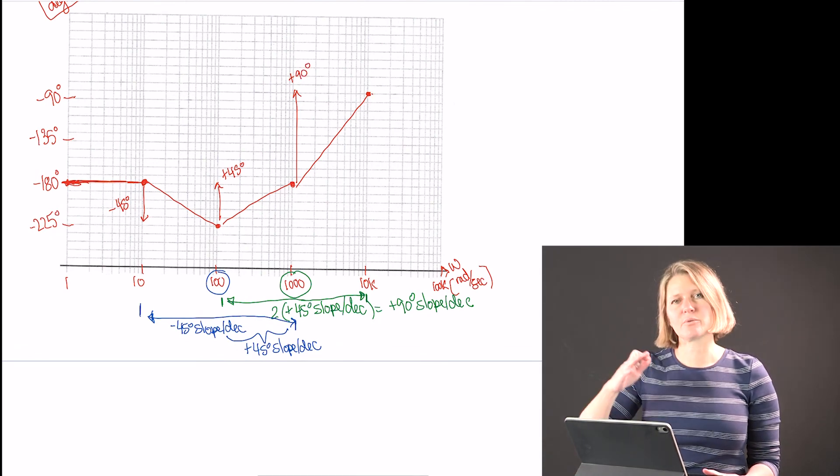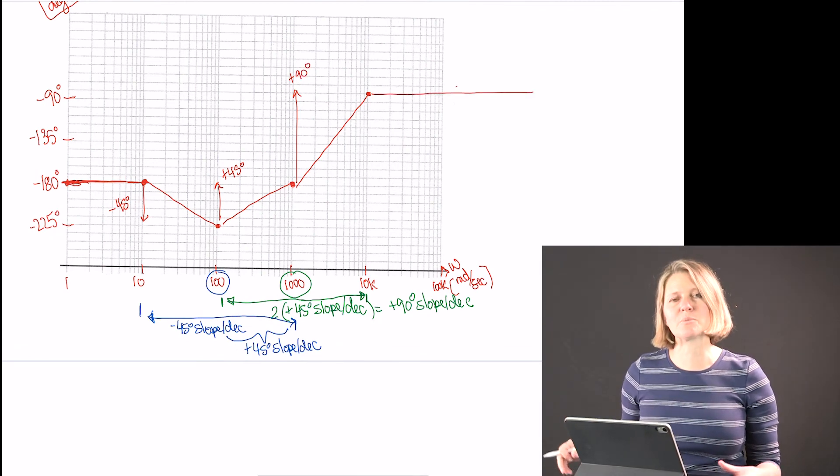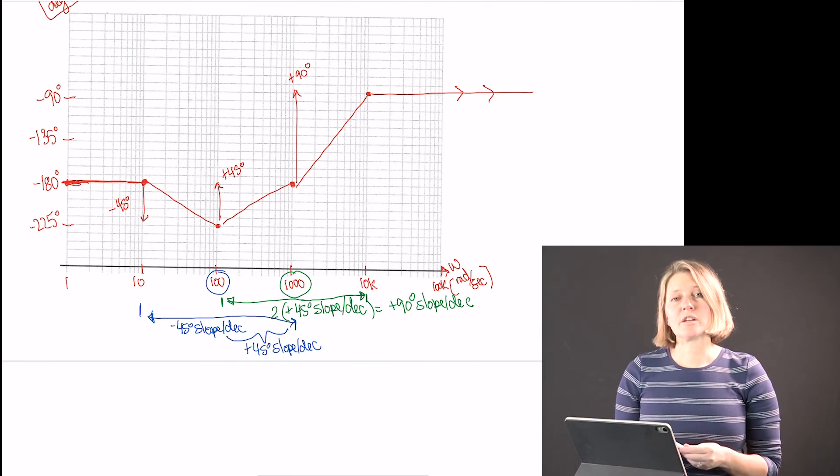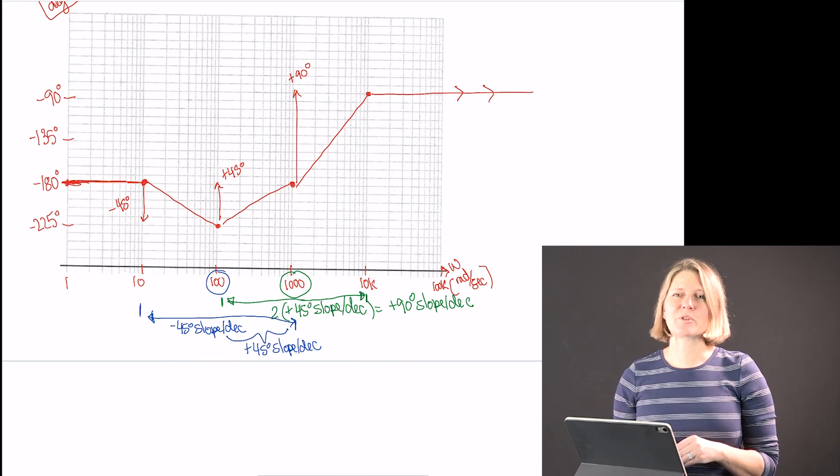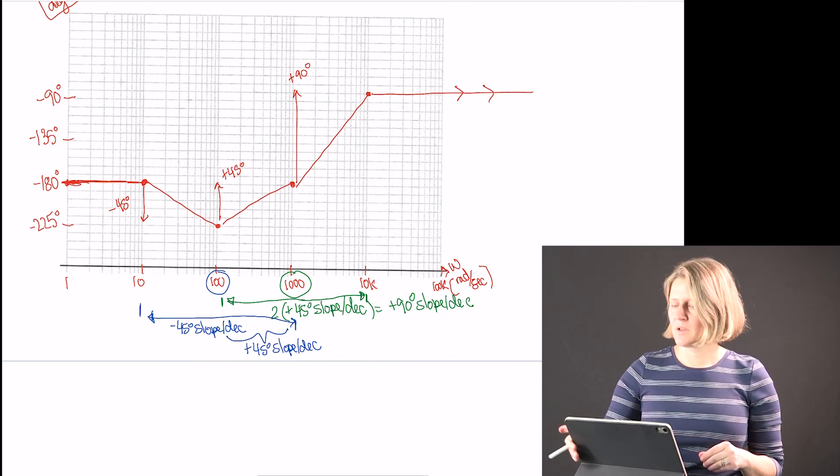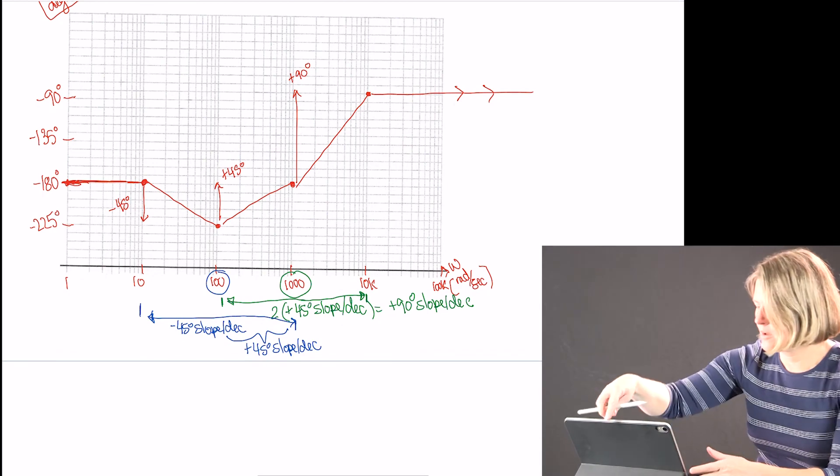And then it becomes flat after that. And it will be at that minus 90 degrees for the rest of the time. It doesn't have any more regions of where the pole or zero is affecting it. All right, this concludes this example. Thanks for watching.